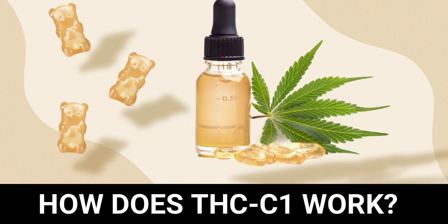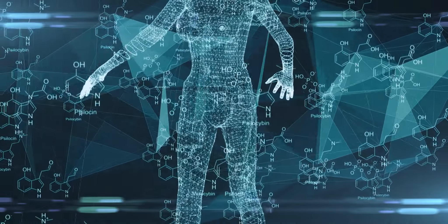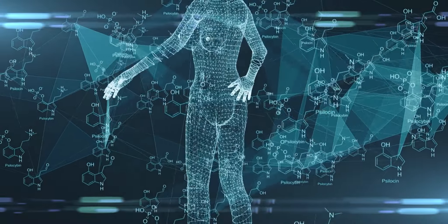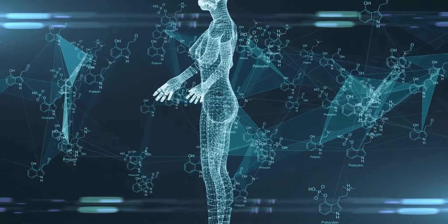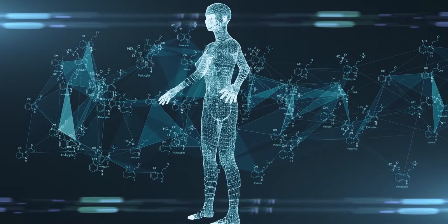How does THC-C1 work? THC works with cannabinoid receptors in the body by binding with them in the brain and nervous system where they are found. THC stays longer in the body than most other drug substances, which only last for a few hours.